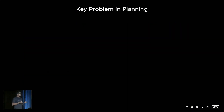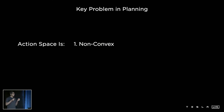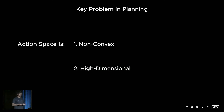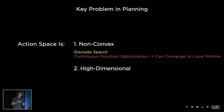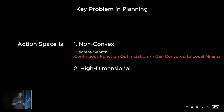What is the key problem in planning? Number one, the action space is very non-convex. And number two, it is high dimensional. What I mean by non-convex is there can be multiple possible solutions that can be independently good, but getting a globally consistent solution is pretty tricky.